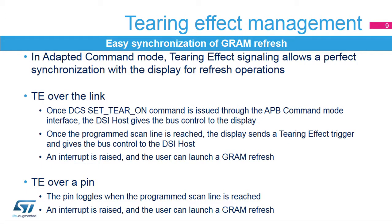The tearing effect allows perfect synchronization between the display and the DSI Host for refresh operations on displays having their own graphics RAM. It can be signaled in two ways: over the link without an additional pin, or using an additional pin. When signaled over the link, the DSI Host sends a set-tear-on command and gives control of the bus to the display; once the programmed scan line is reached, the display sends a trigger back to the DSI Host and an interrupt can be raised to launch the graphics RAM refresh. When signaled over a pin, the display toggles a dedicated GPIO to trigger the DSI Host when the programmed scan line is reached, avoiding multiple exchanges over the link, and an interrupt can be raised on the pin to launch the graphics RAM refresh.